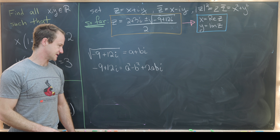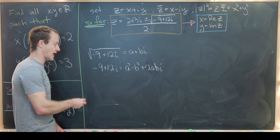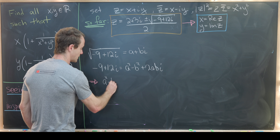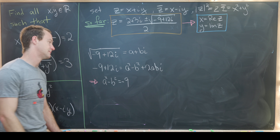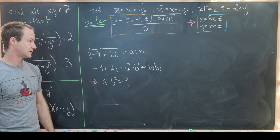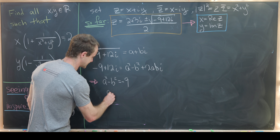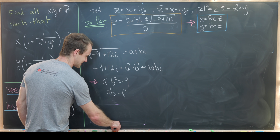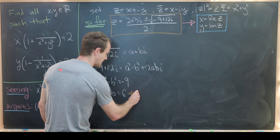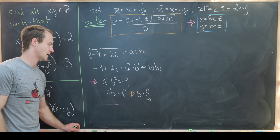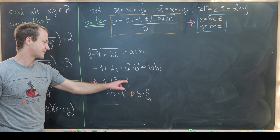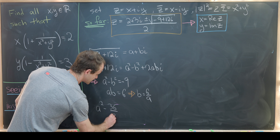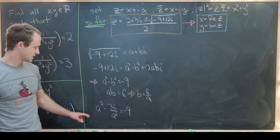Equating real and imaginary parts gives the system: a² − b² = −9, and 2ab = 12, i.e., ab = 6. So b = 6/a. Substituting back into the first equation gives a² − 36/a² = −9.